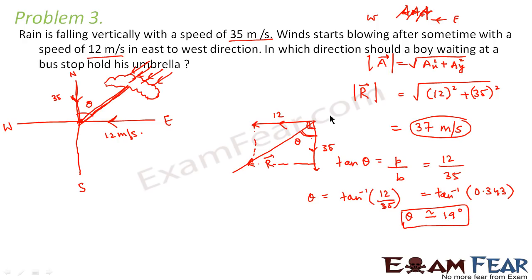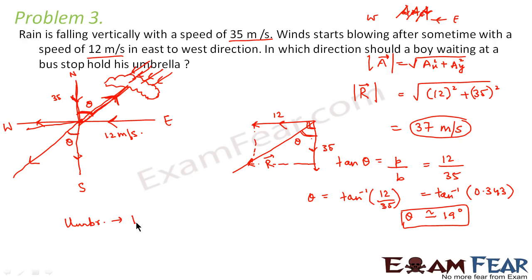Now visualizing the figure: the 12 meter per second vector is horizontal and the 35 meter per second vector is vertical, with the resultant R representing the direction of falling rain. Since this angle is theta and the vertically opposite angle is also theta, the boy has to hold the umbrella at an angle of 19 degrees with the vertical towards the east direction.